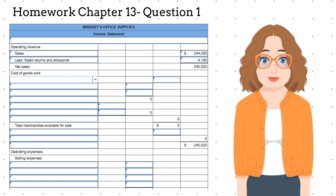Net sales minus cost of goods sold is gross profit on sales. What is left to do? Sort the expenses by selling expenses, which are accounts 611 to 617, and general and administrative expenses, which are numbered 631 to 646.